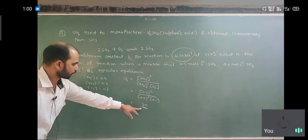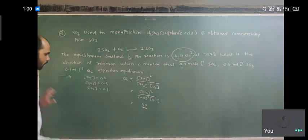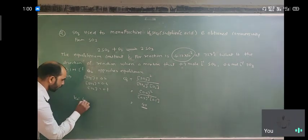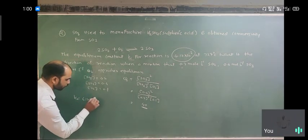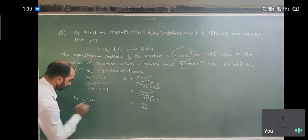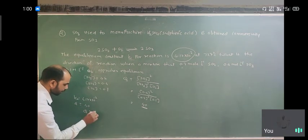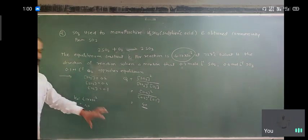And if you compare, K is given to you. Here Kc is equal to, K is equal to 4.17 into 10 raised to minus 2. And Q is 40. That means Q is greater than K. Q is greater than K.